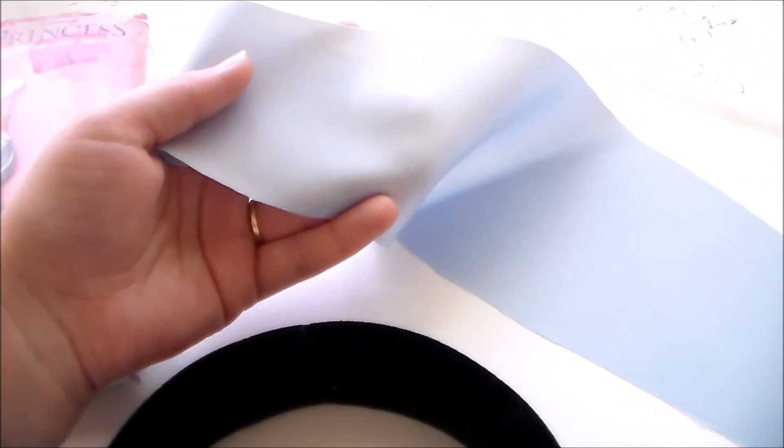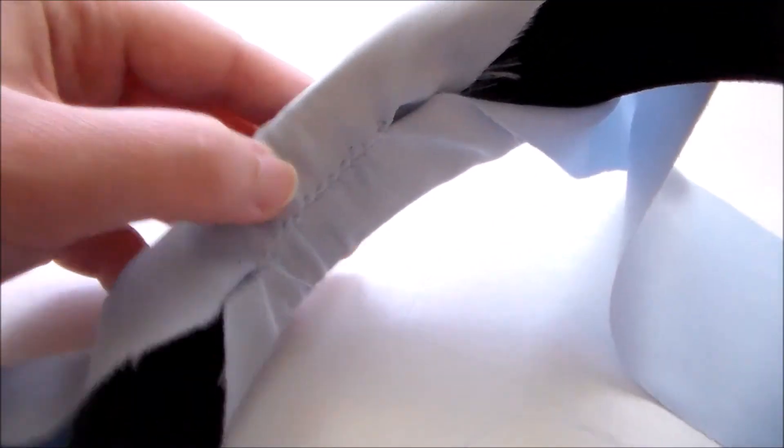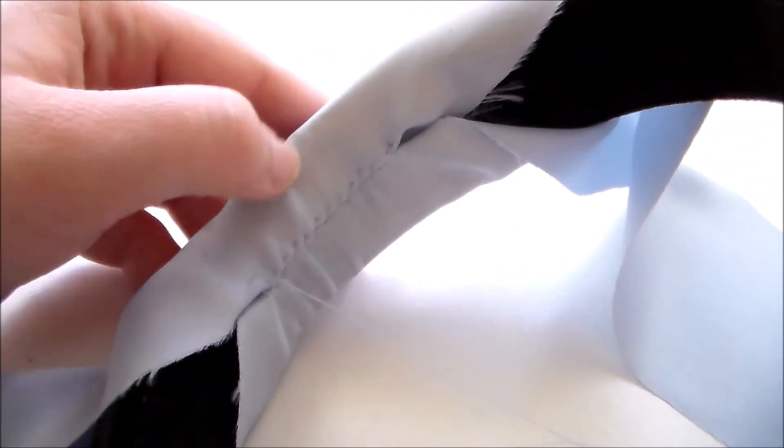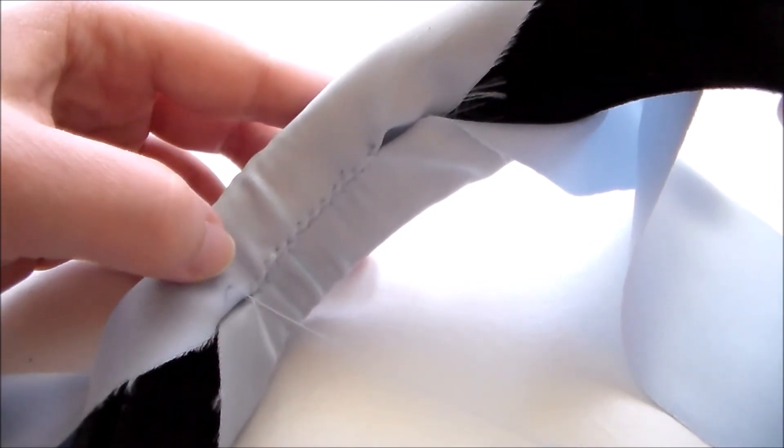And I used the same blue satin that I used for the dress. Starting in the middle and working my way towards the end, I wrapped the fabric around the headband, folding the raw edges inward, and then just hand-sewed a whip stitch to hold it together.